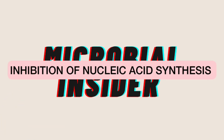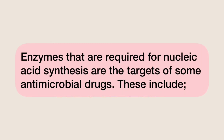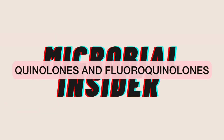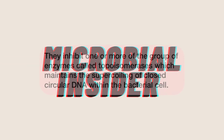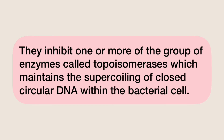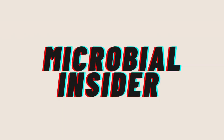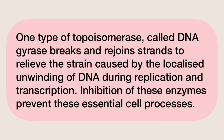Inhibition of nucleic acid synthesis. Enzymes that are required for nucleic acid synthesis are the targets of some antimicrobial drugs. The quinolones and fluoroquinolones inhibit one or more of a group of enzymes called topoisomerases, which maintain the supercoiling of closed circular DNA within the bacterial cell. One type of topoisomerase called DNA gyrase breaks and rejoins strands to relieve the strain caused by the localized unwinding of DNA during replication and transcription. Inhibition of these enzymes prevents these essential cell processes.